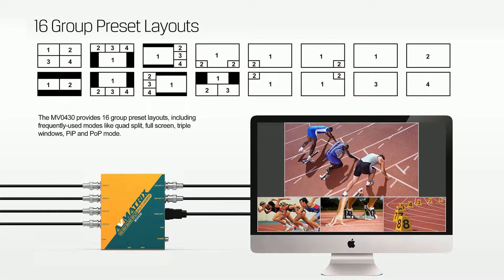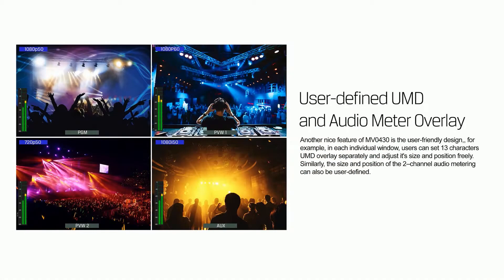It provides 16 group preset layouts, including frequently used modes like quad-split, full-screen, PIP, and POP mode. In each individual window, users can set the size and position of UMD and audio meter overlay.